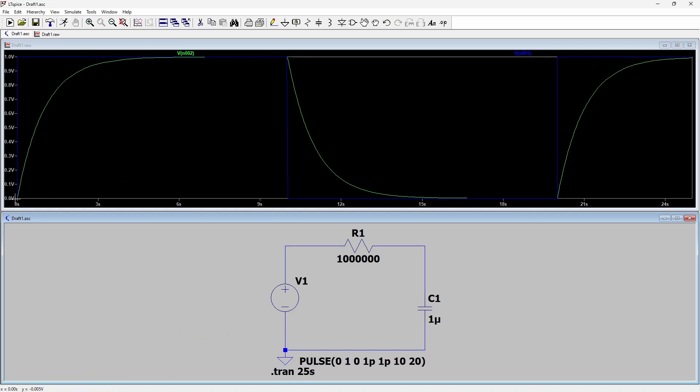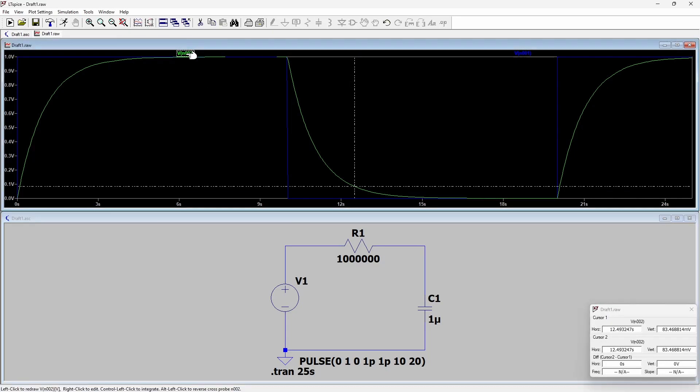You can see that this is a pretty typical RC response curve. Now we can bring in markers on LTSpice by clicking on the signal name. So we've got two markers on this.